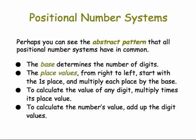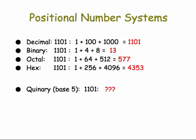Let's finish by thinking about abstraction. We've looked at several number systems, and there's an abstract pattern they all have in common. They're all positional number systems, meaning their bases determine the number of digits they have and the place values, which are simply powers of the base. To calculate the value of any digit, you multiply it by its place value, and to calculate the number's value, you add up all the digit values. For example, 1101 in decimal is 1 + 100 + 1000; in binary it's 1 + 4 + 8; in octal it's 1 + 64 + 512; in hex it's 1 + 256 + 4096.